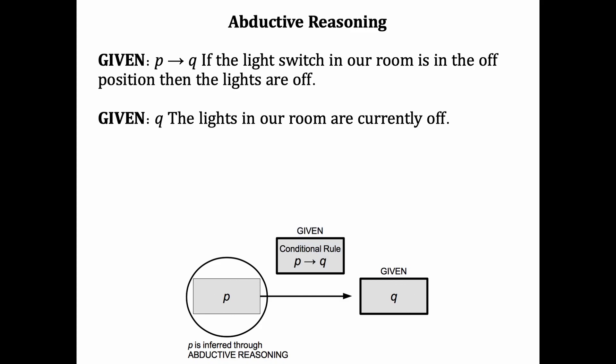If the light switch is in the off position, then the lights will be off. Let's also say that you walk into a room and observe that the lights are off. That's going to be the effect Q. And that's given as well. What we'll do next is we'll try to guess the reason or cause for the lights being off. We can make an abductive inference that the reason the lights are off is because the light switch is in the off position. This is an example of abductive reasoning.